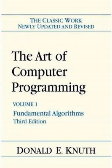Volume 4, Fascicle 0 — Introduction to Combinatorial Algorithms and Boolean Functions, Addison-Wesley Professional, 2008, vi + 240 pp. ISBN 0-321-53496-4. Errata: 16, 1 January 2011. Volume 4, Fascicle 1 — Bitwise Tricks and Techniques; Binary Decision Diagrams. Addison-Wesley Professional, 27 March 2009, viii + 260 pp. ISBN 0-321-58050-8. Errata: 17, 1 January 2011.